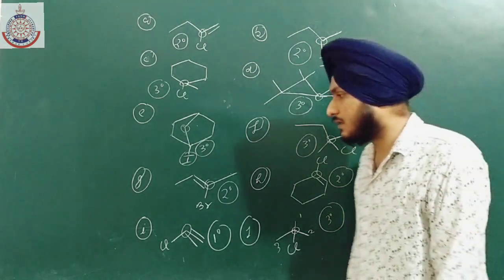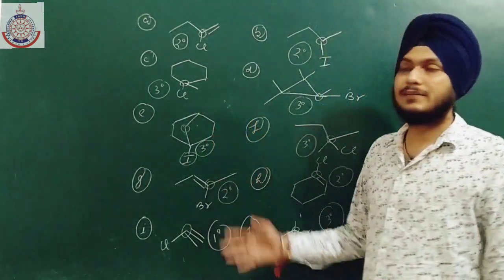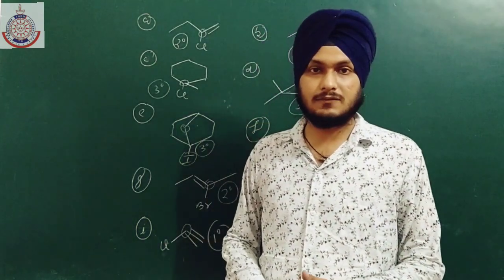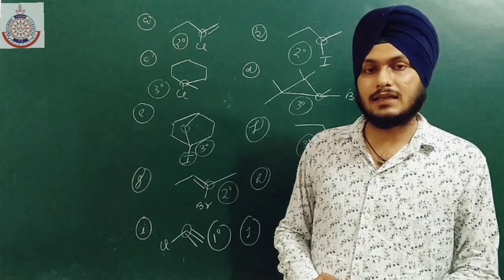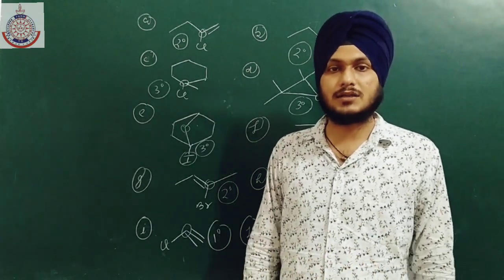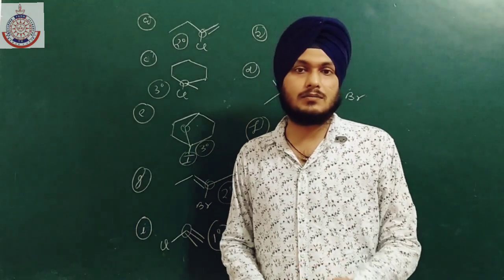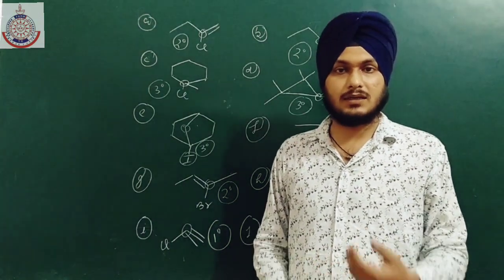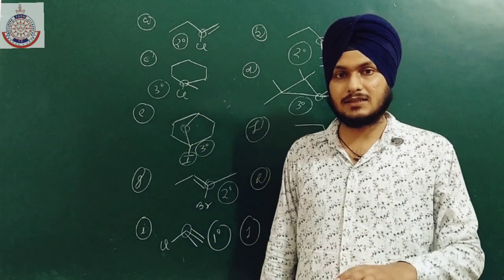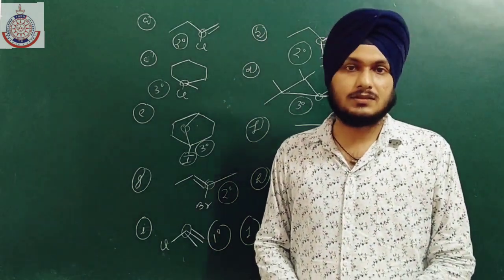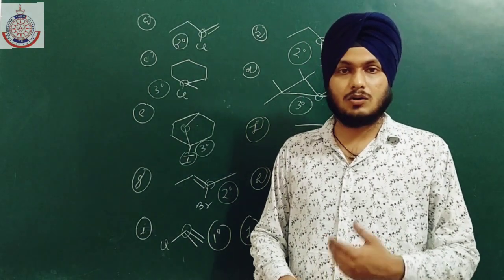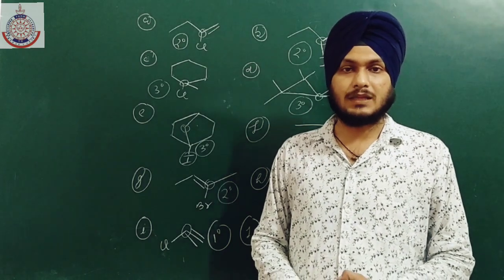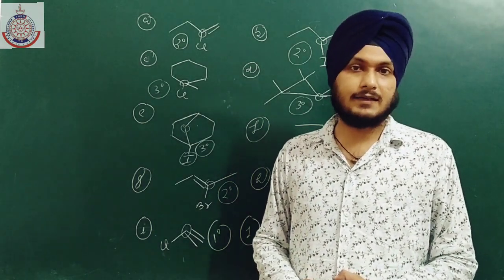In part (j), the carbon to which chlorine is attached is bonded to three carbon atoms, so it is tertiary. This is all about primary, secondary, and tertiary classification. In the next lecture, we will discuss more examples related to nomenclature, including common terms like iso, neo, and others important for board and competitive exams. Thank you — stay safe and keep learning.